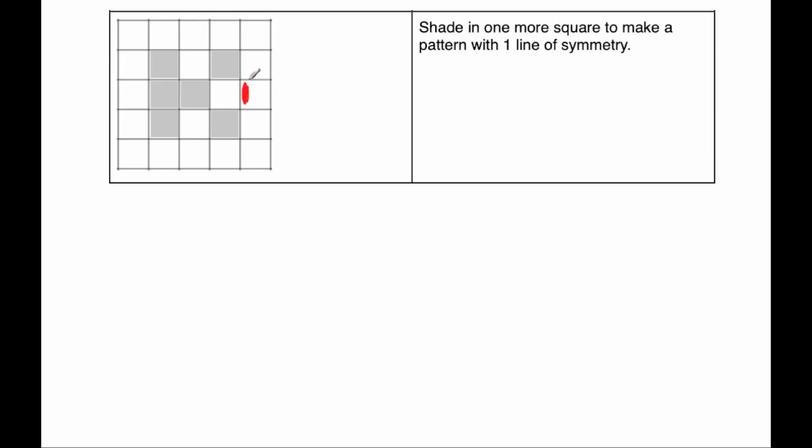So I'm actually going to shade in this square here. If I shade in this square, there'll only be a horizontal line of symmetry across here. Like so. And that's it. You could have shaded in other squares. You could have shaded in this square to the left and so on. Okay.